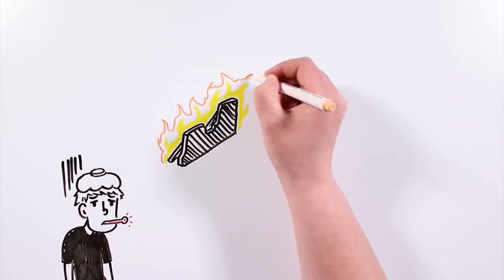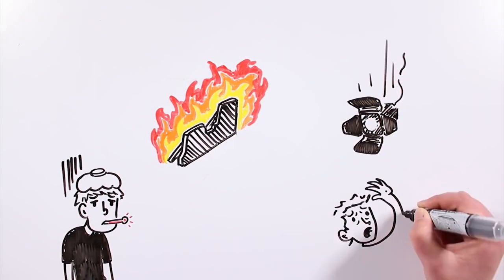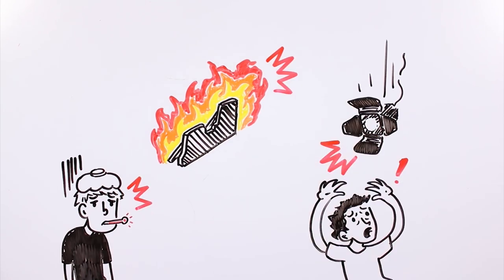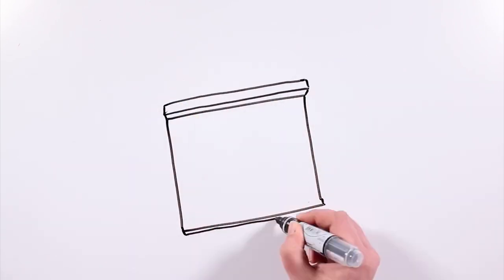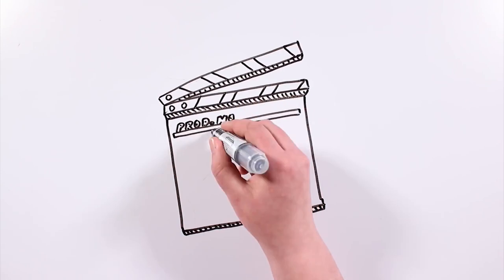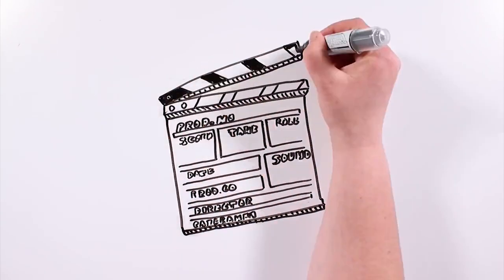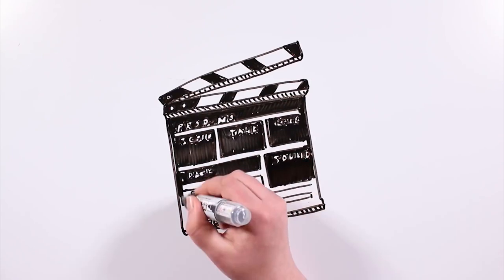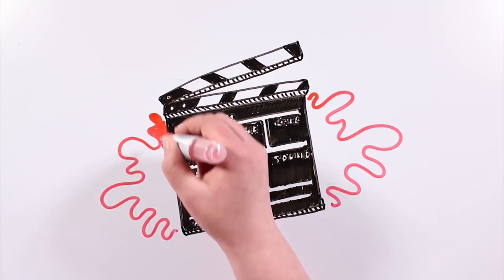An actor who gets sick, a set that catches fire, a spotlight that falls on a technician. Movie shootings are so long and involve so many people that it's normal for accidents to happen. But what happened in these productions is not at all usual or a simple coincidence.